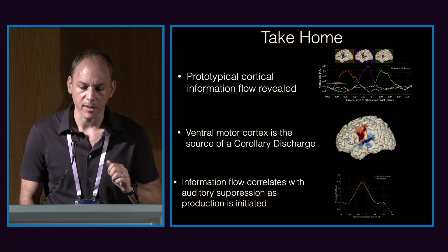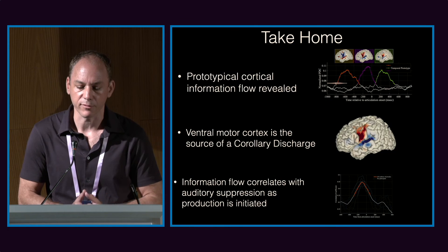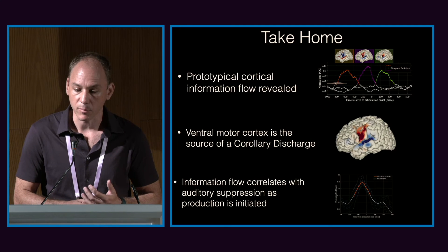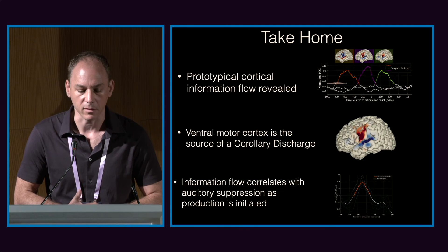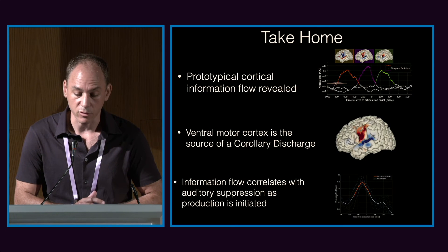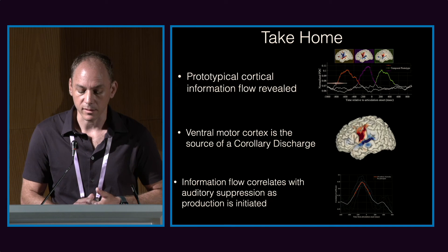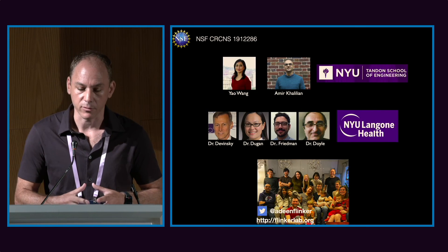In summary, as part of this grant we created a pipeline to extract prototypical cortical information flow across cortex, which we will publish and share with the community for use with different human electrophysiological techniques, both invasive and non-invasive. We provide robust evidence for the source of corollary discharge in human speech in ventral motor cortex, with timing prior to speech that correlates robustly with the degree of auditory suppression. This was a CRCNS grant from our lab in collaboration with PI Yao Wang, led by Amir Khalilian, and we couldn't do this work without our clinicians and neurosurgeons.